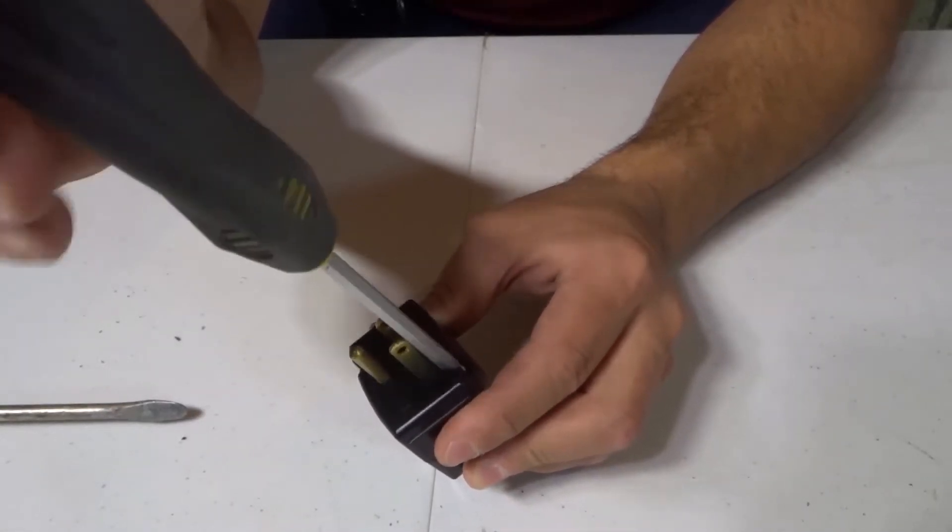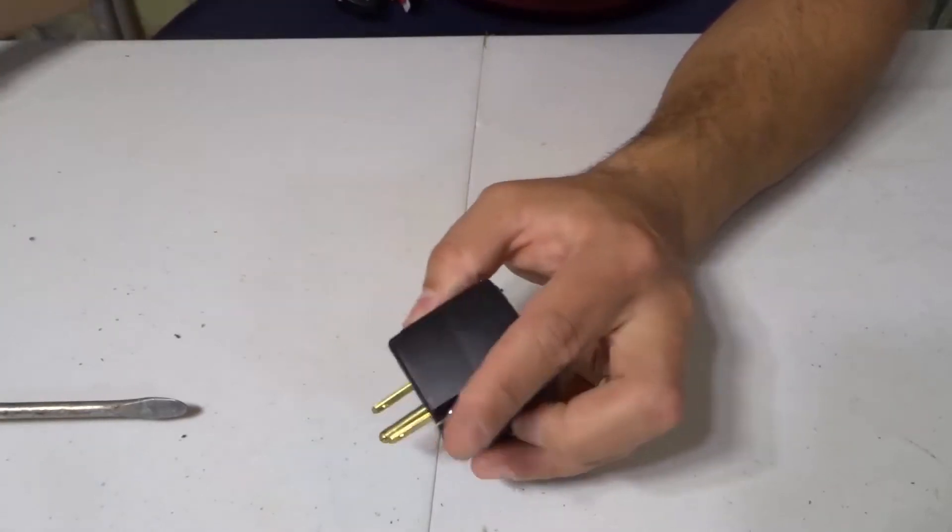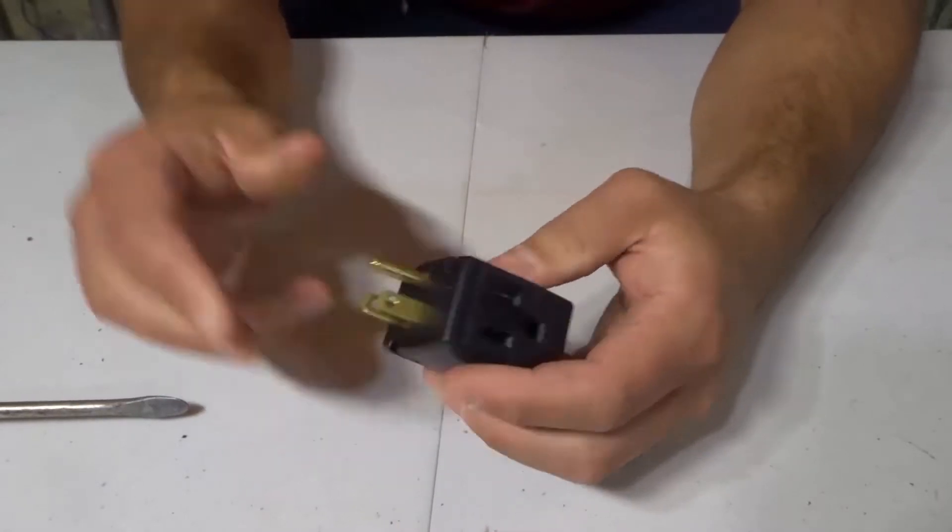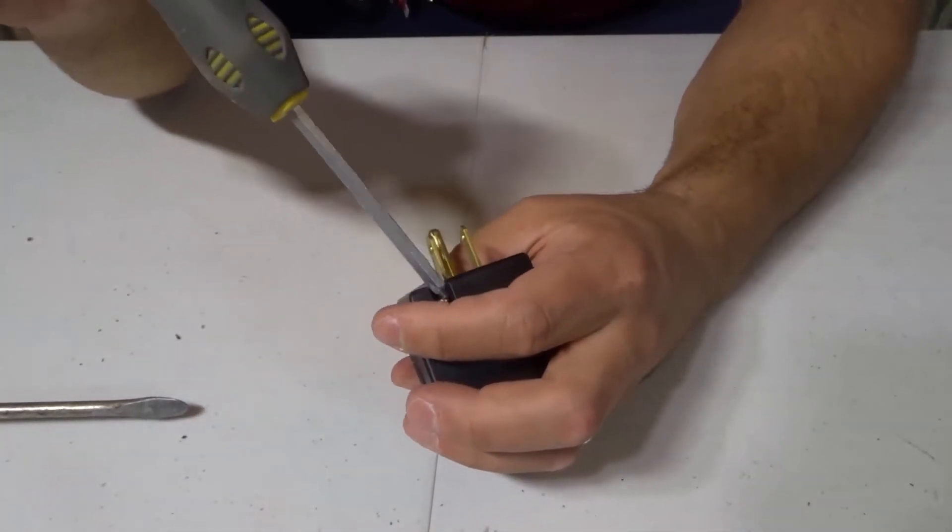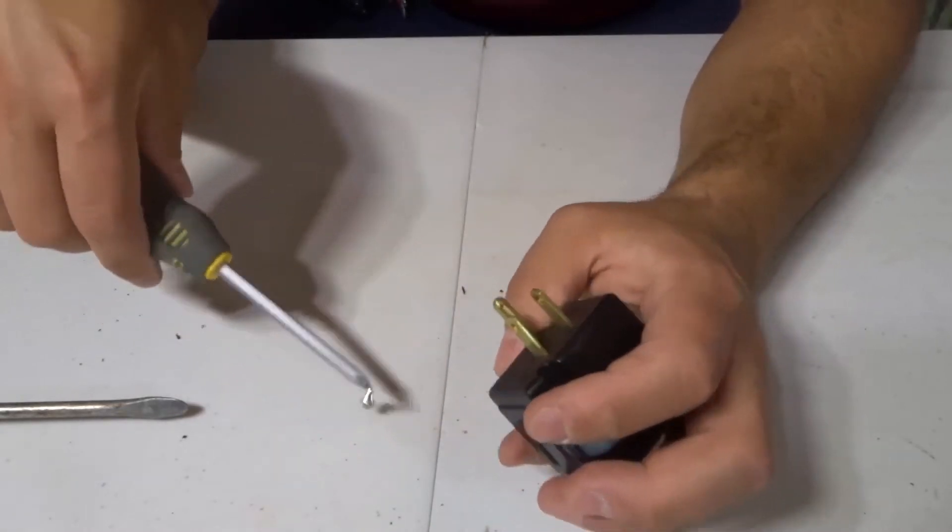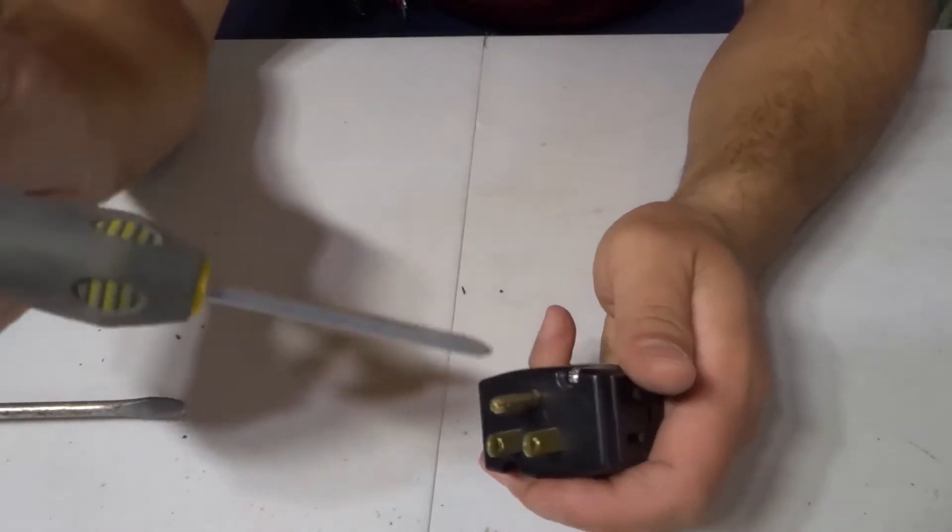They're actually very similar to a power bar in how they work but their only difference is that they're much smaller and they only have three options basically. So we're going to remove the screws. There we go there's one and we're gonna remove this one over here.